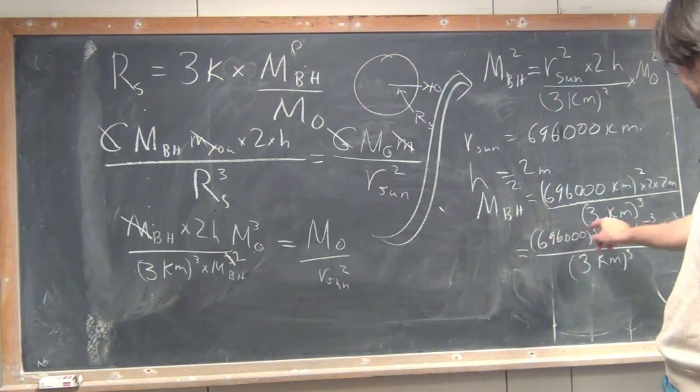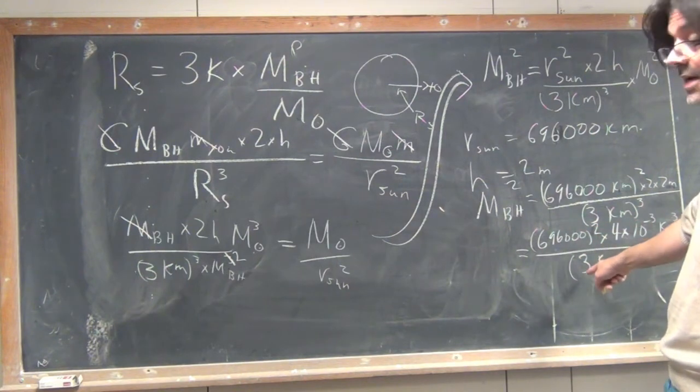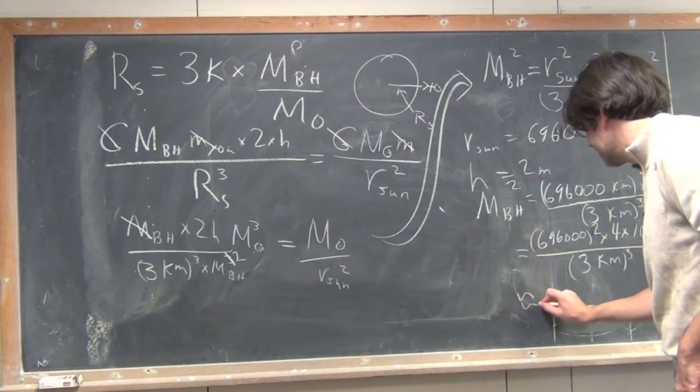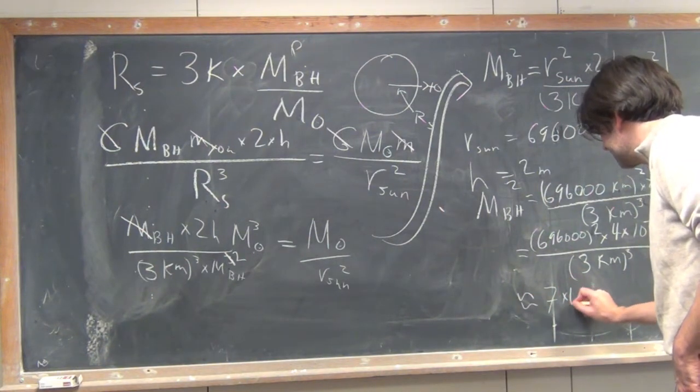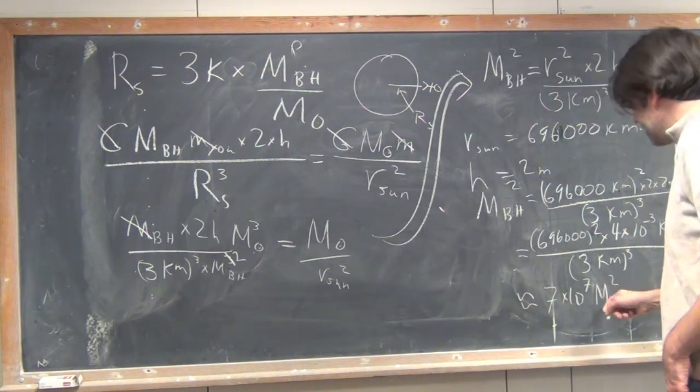So, I just need to, sorry, this is a square. I need to square this. Multiply that out. Divide by 3 cubed, which is 27. And all together, I'm going to get something which is around 7 times 10 to the 7 mass of the sun squared.